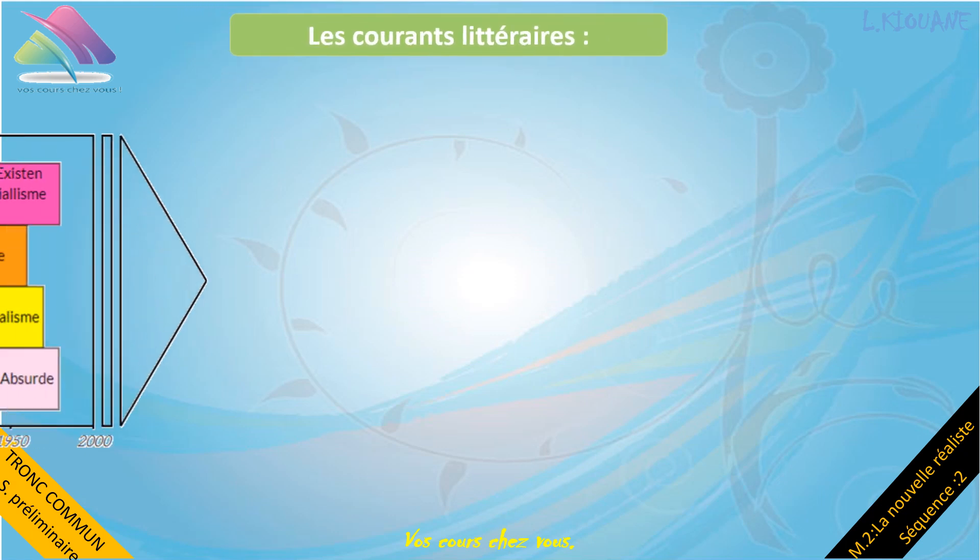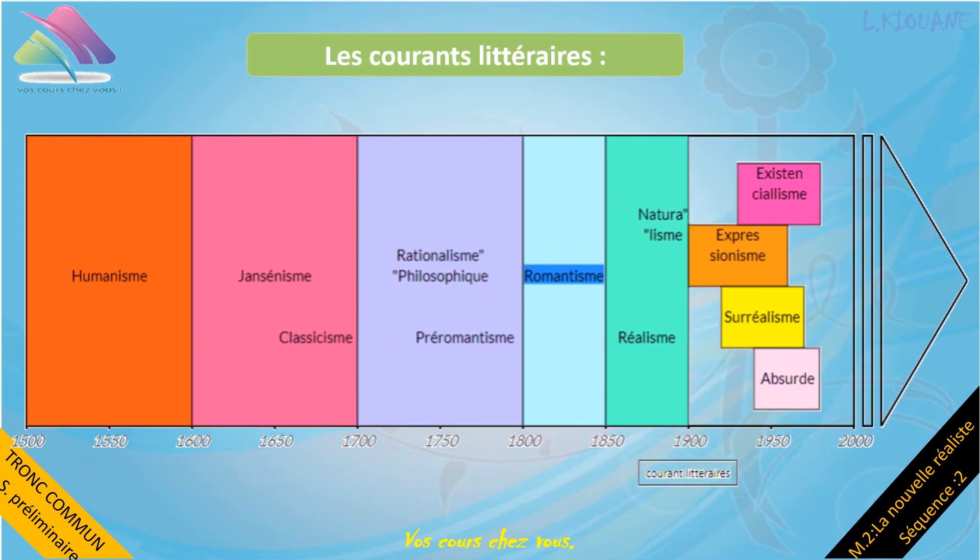Commençons par une frise chronologique qui représente les courants littéraires qu'a connu l'histoire : l'humanisme, le jansénisme, le classicisme, le rationalisme philosophique, le préromantisme, le romantisme, le naturalisme, le réalisme, l'existentialisme, l'expressionnisme, le surréalisme et l'absurde.